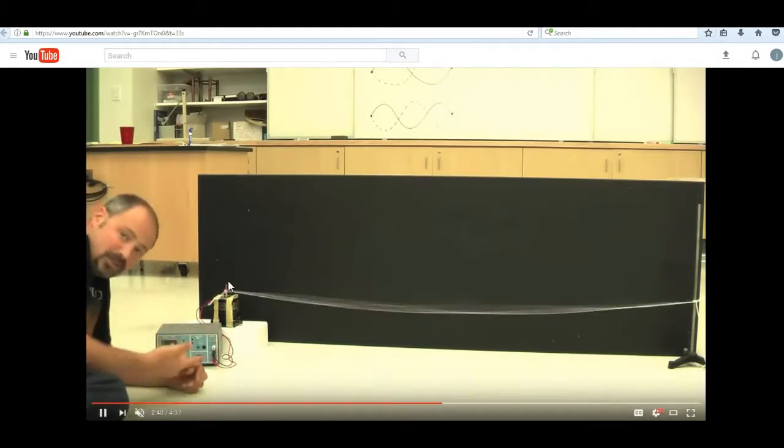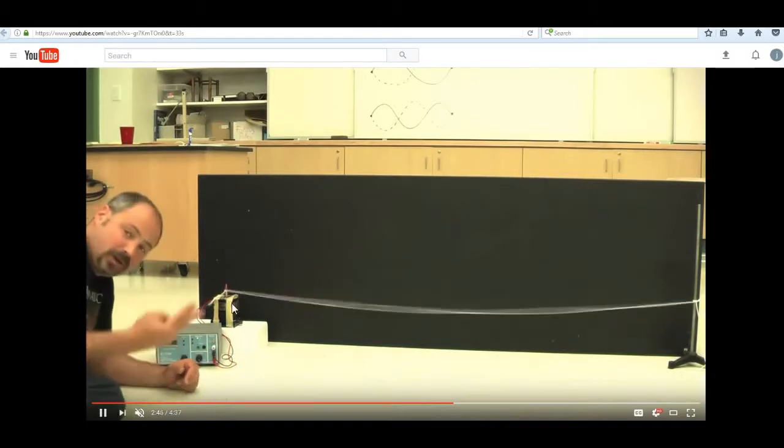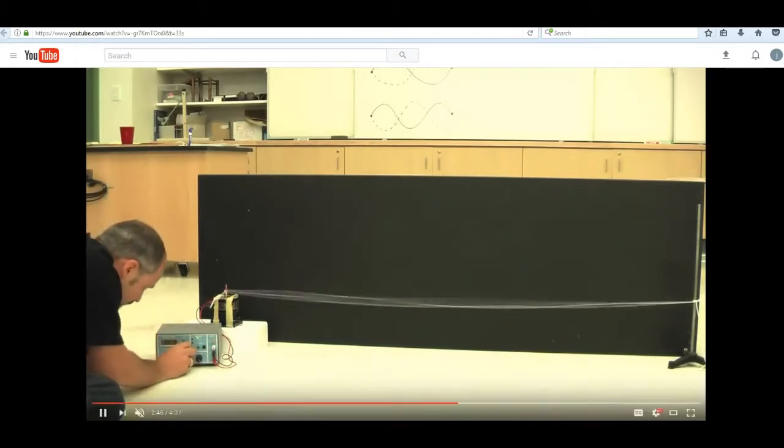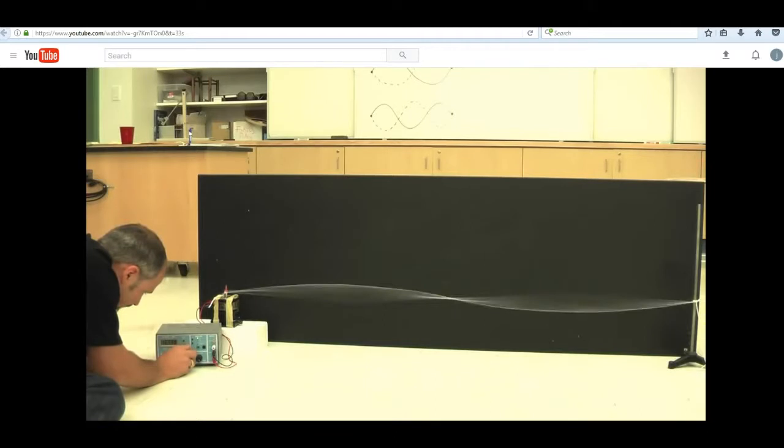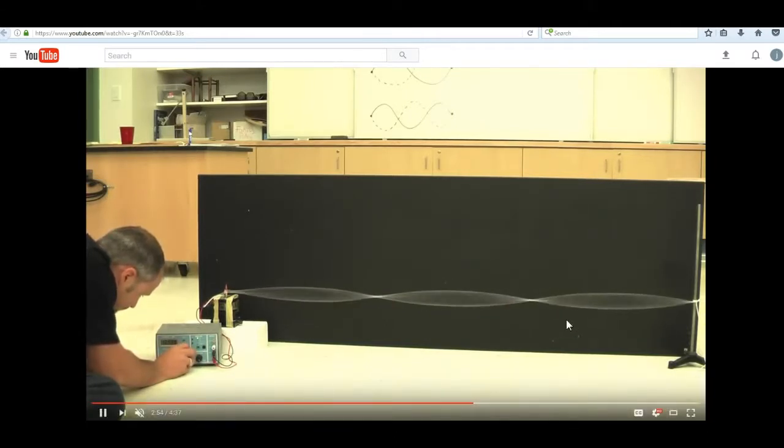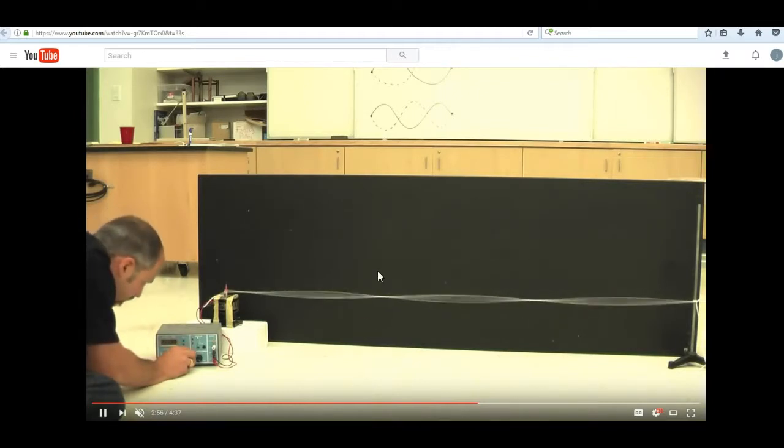When we turn up the speed of this vibrator and make the frequency increase, well, a higher frequency means a smaller wavelength. So here's a shorter wavelength. In fact, the wave is short enough that we could see just a full wave. And here's an even shorter wavelength.